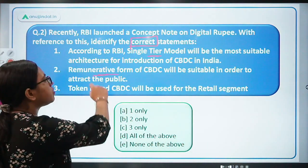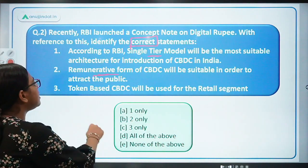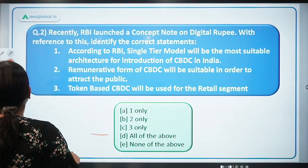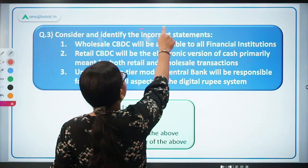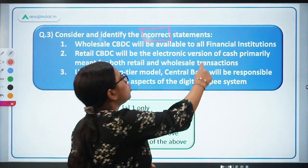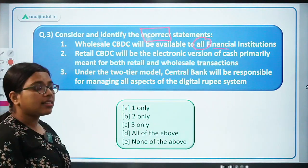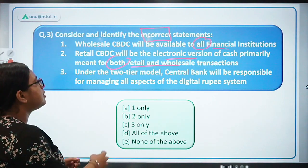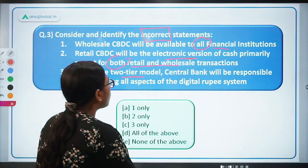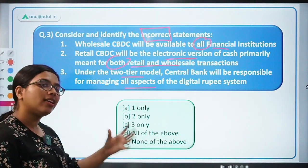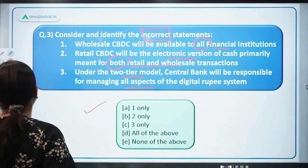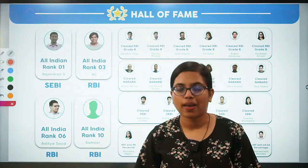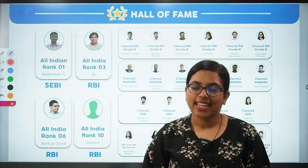The second question asks you to identify correct statements: Statement 1 — the single-tier direct model will be the most suitable architecture for CBDC in India; Statement 2 — remunerative CBDC will be suitable to attract the public; Statement 3 — token-based CBDC will be used for the retail segment. The third question asks you to identify incorrect statements about wholesale CBDC, retail CBDC, and the two-tier model. Answers are provided in the PDF. Take care and bye-bye.